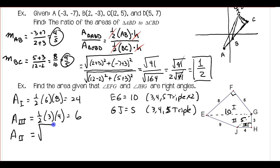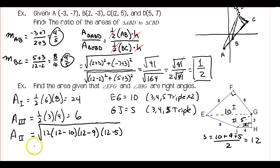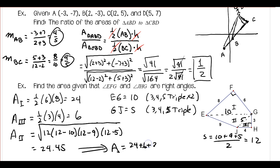Now knowing all three sides of triangle two, we apply Heron's Formula. The semi-perimeter S equals (10 plus 9 plus 5) divided by 2 equals 12. The area equals the square root of 12 times (12 minus 10) times (12 minus 9) times (12 minus 5), which gives approximately 24.45. Therefore the total area is 24 plus 6 plus 24.45, which equals approximately 54.45.